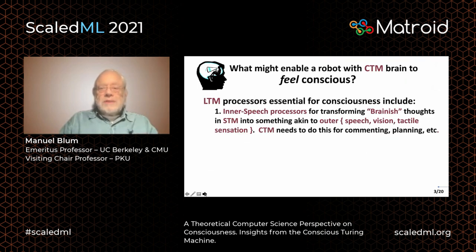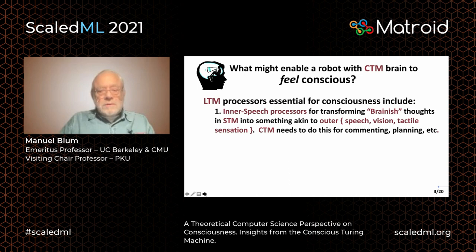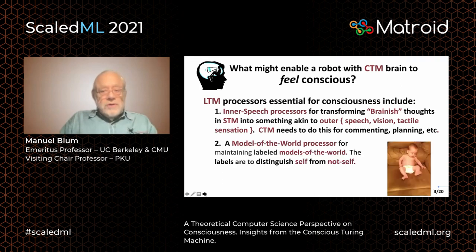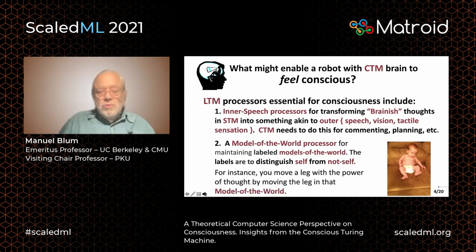Can the CTM tap into something like that? What might enable a robot with a CTM brain to feel conscious? LTM processors essential for consciousness include, first, inner speech processors for transforming brainish thoughts in STM into something akin to outer speech — or vision or tactile sensation. The CTM needs to do this for commenting, planning, etc. Also essential is a model of the world processor for maintaining labeled models of the world. The labels serve many purposes, especially the ability to distinguish self from not-self. For instance, you move a leg with the power of thought by moving the leg in that model of the world.